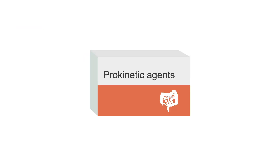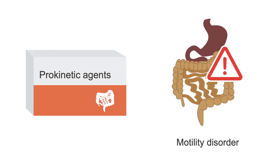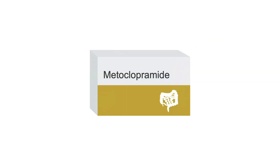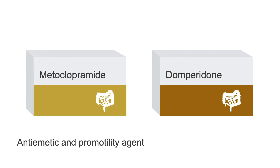Another class of medications worth mentioning is prokinetic agents. Anti-emetics may help with the urge to vomit, but prokinetics can be helpful when nausea and vomiting are caused by a motility disorder like gastroparesis. Metoclopramide, a dopamine antagonist in particular, can do double duty as both an anti-emetic and a pro-motility agent. Domperidone is another less widely used example.